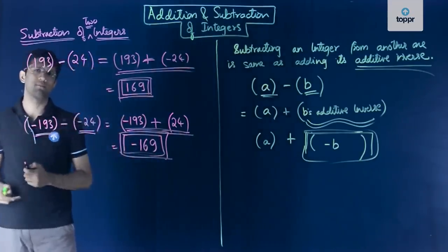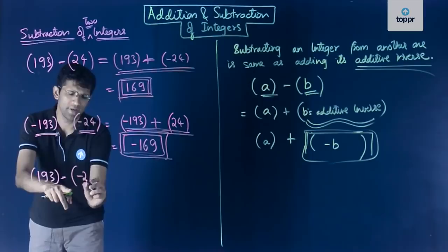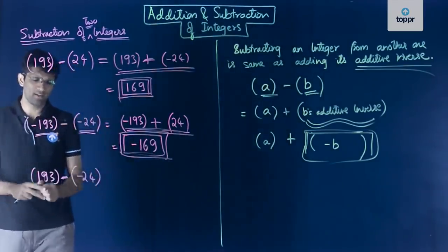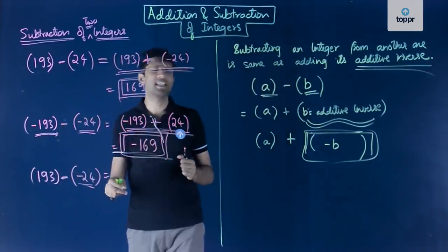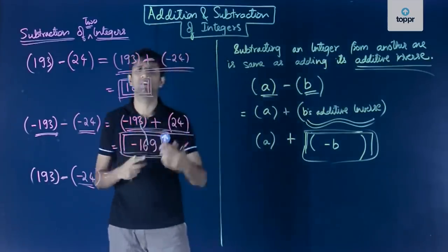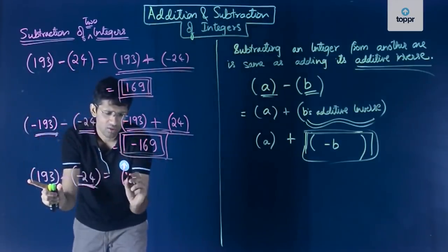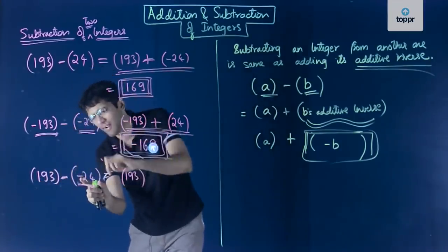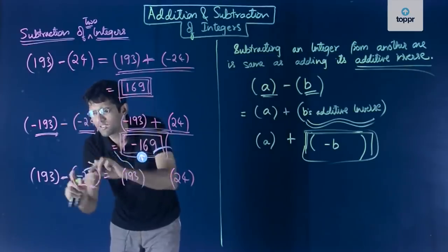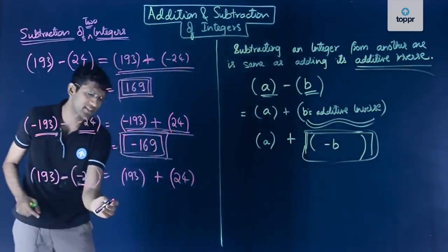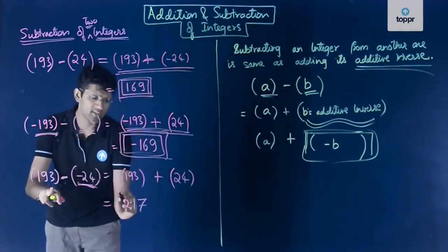For one more example, suppose we compute 193 − (−24). The additive inverse of −24 is +24, and because we replace −24 with its additive inverse, the minus sign changes to plus. We get 193 + 24 = 217. Finally, if we have −193 − 24, the additive inverse of 24 is −24, the minus becomes plus, giving −193 + (−24) = −217.